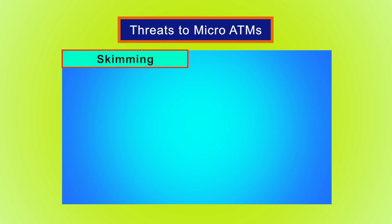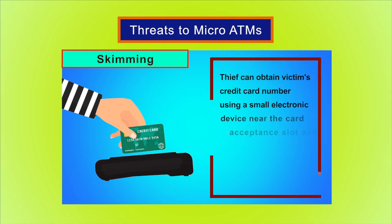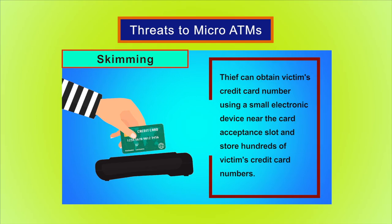Skimming is the theft of credit card or debit card information. A thief can obtain a victim's credit card number using a small electronic device near the card acceptance slot and store hundreds of victims' credit card numbers.